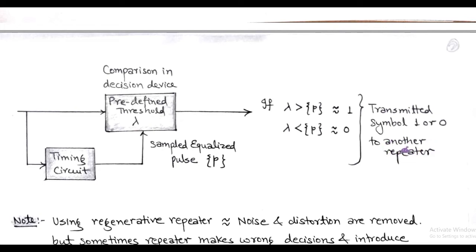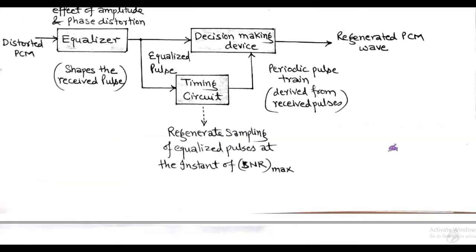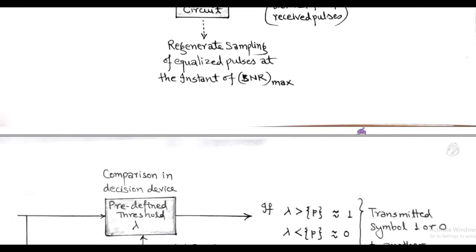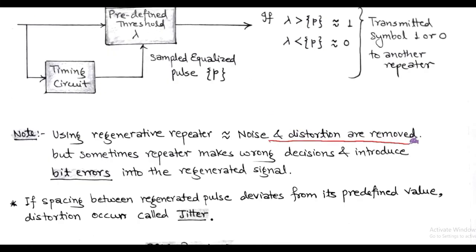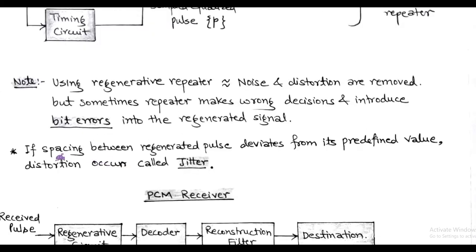And again perform the same operation, that is equalization and decision. So using regenerative repeater, noise and distortion are removed. But sometimes repeater makes a wrong decision, and in this situation there is an introduction of bit error. Also, if the spacing between regenerative pulses deviates from predefined value, distortion occurs which is called jitter.